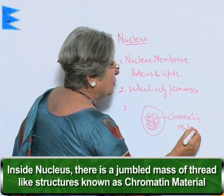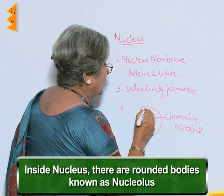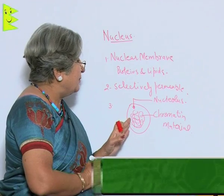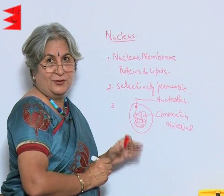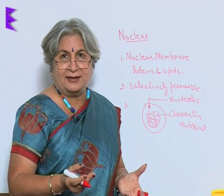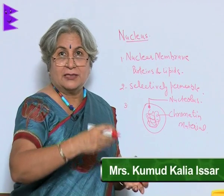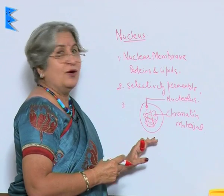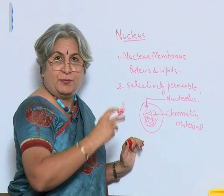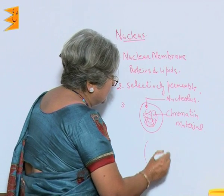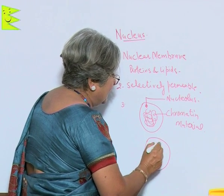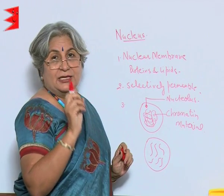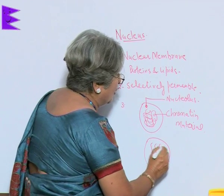There are also one or more rounded bodies called nucleolus. Chromatin material is like noodles — you do not know where they are starting and where they are ending. Or sometimes like a ball of wool that gets entangled. But it does not always remain like that. When the cell is preparing to divide, these are actually seen as single individual threads.